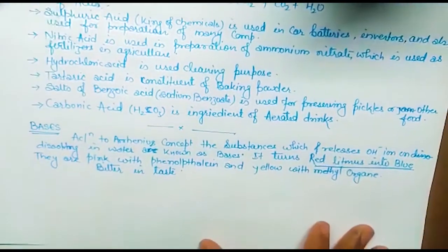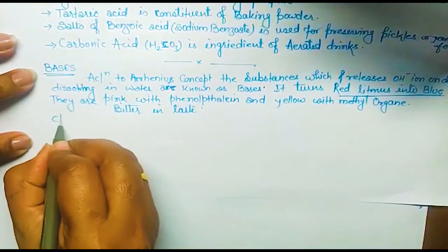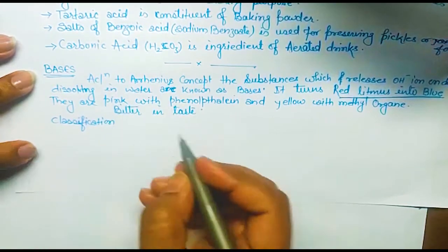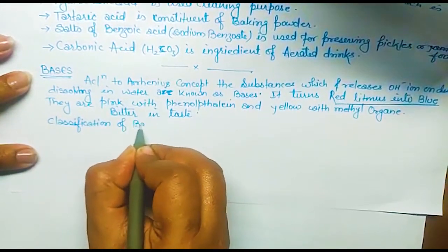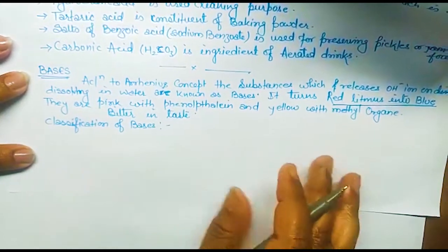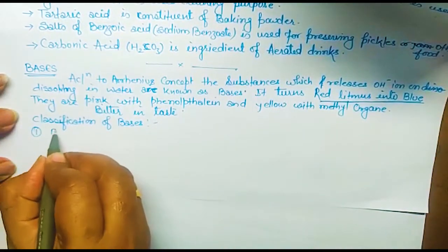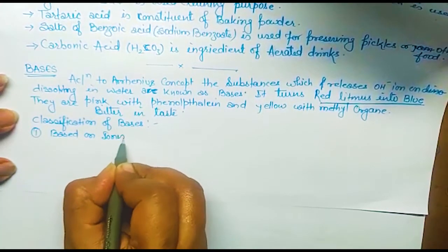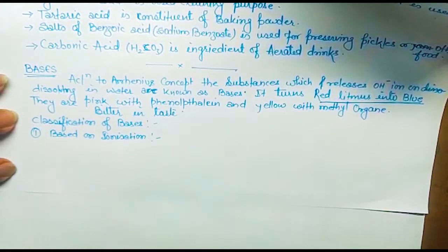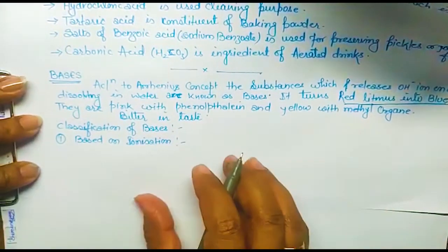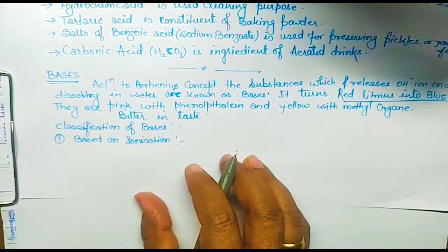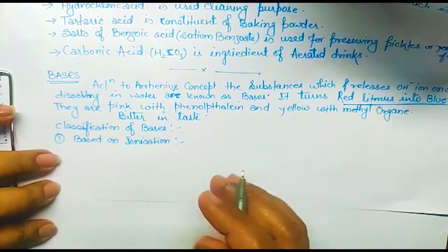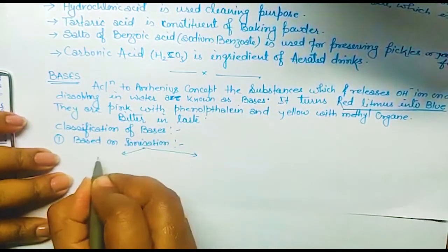Classification of bases: as we did for acids, we can classify bases based on ionization. A base that completely ionizes into its ions is considered a strong base — for example, NaOH and KOH. A base that does not completely ionize is a weak base.